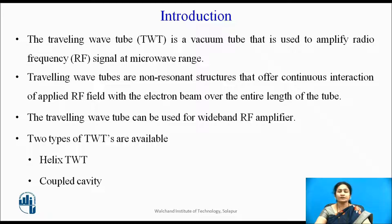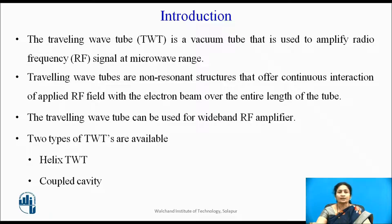As we are familiar with the klystron tube — two-cavity klystron, reflex klystron — they are acting as linear devices. Similarly, this is also working on the principle of velocity modulation. The TWT is nothing but a vacuum tube which is used to amplify radio frequency signals at a microwave range. These tubes are said to be non-resonant structure devices as they offer a continuous interaction of the RF field with the electron beam over the entire length of the tube — not at the cavity or at the gap, but over the entire length. So these devices can be used as wideband RF amplifiers.